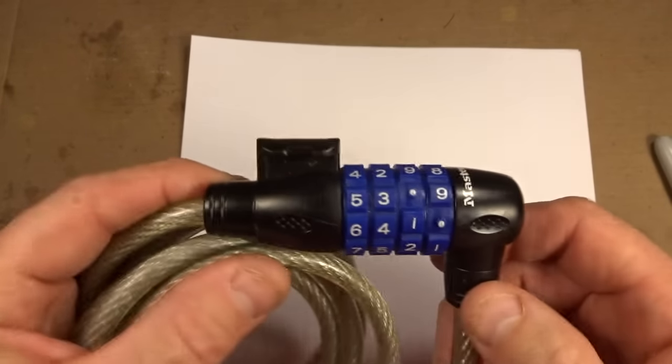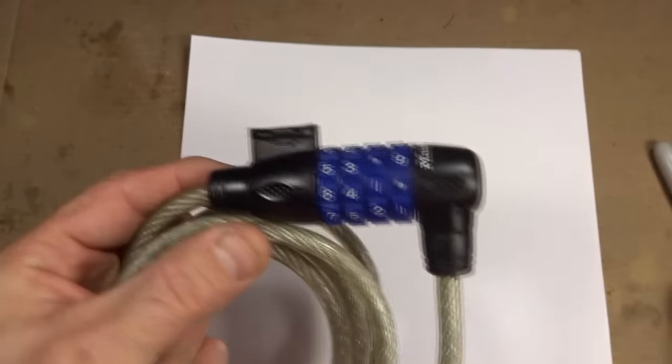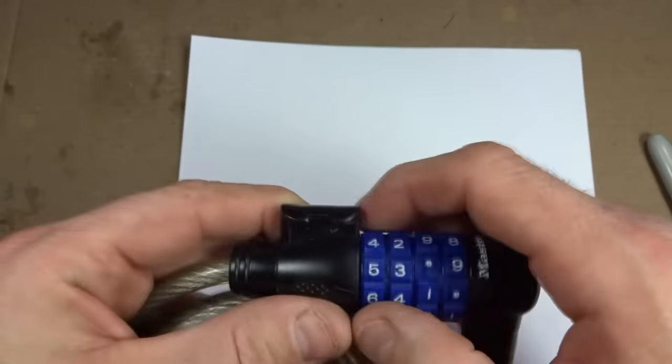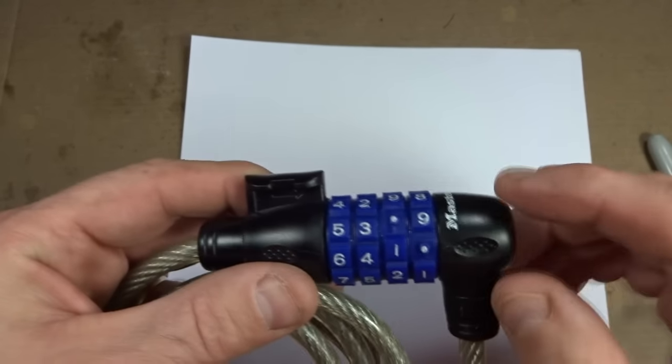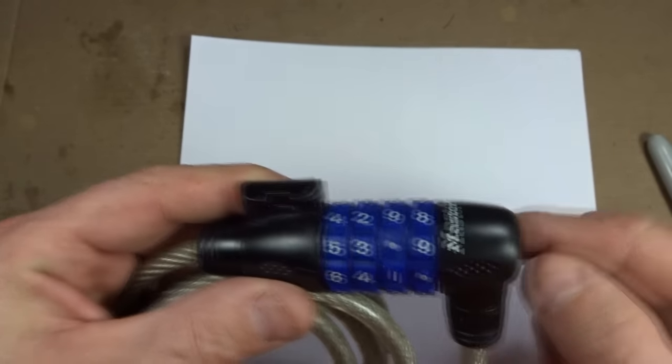Hey viewers. In a previous video, I showed you how to open a bike cable lock like this with little combination wheels where you don't know the combination. And that method in that video works pretty well. It works on most locks like this and I'll include a link to that video in the description of this one.